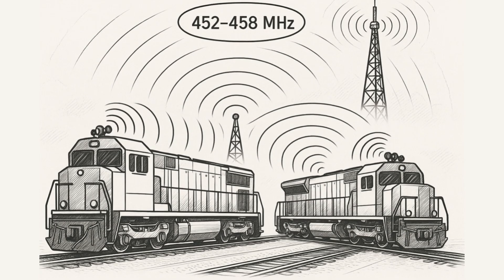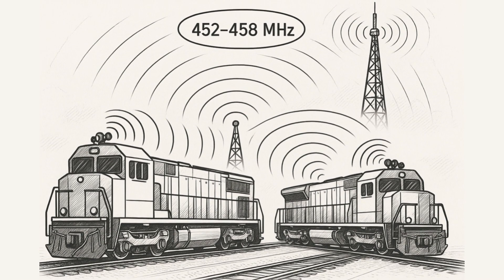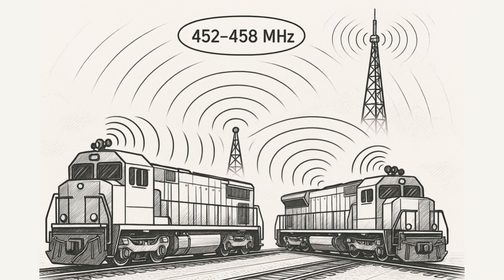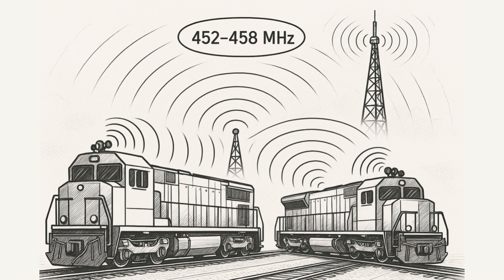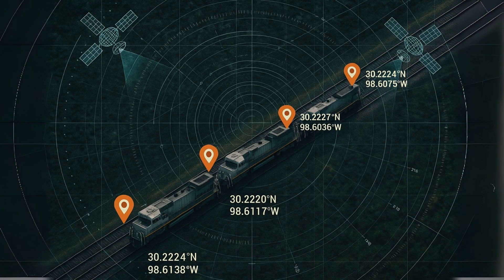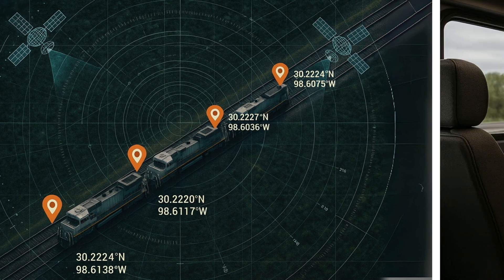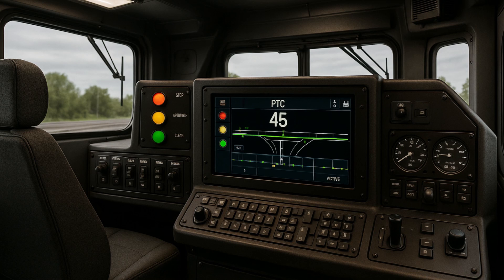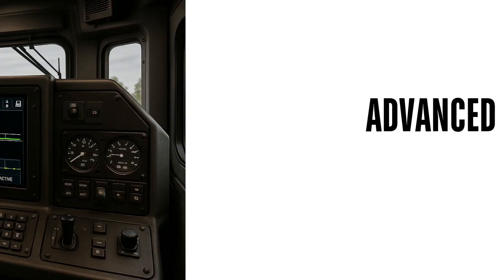Modern distributed power systems utilize radio communication operating on designated frequencies, typically around 452 to 458 megahertz. These systems allow for mid-train or rear-end remote locomotive control with GPS-based positioning for precise coordination. Safety systems include automatic train stop functionality, where loss of communication triggers emergency brake application. Positive train control integration ensures compliance with signal aspects and speed restrictions across the entire consist.